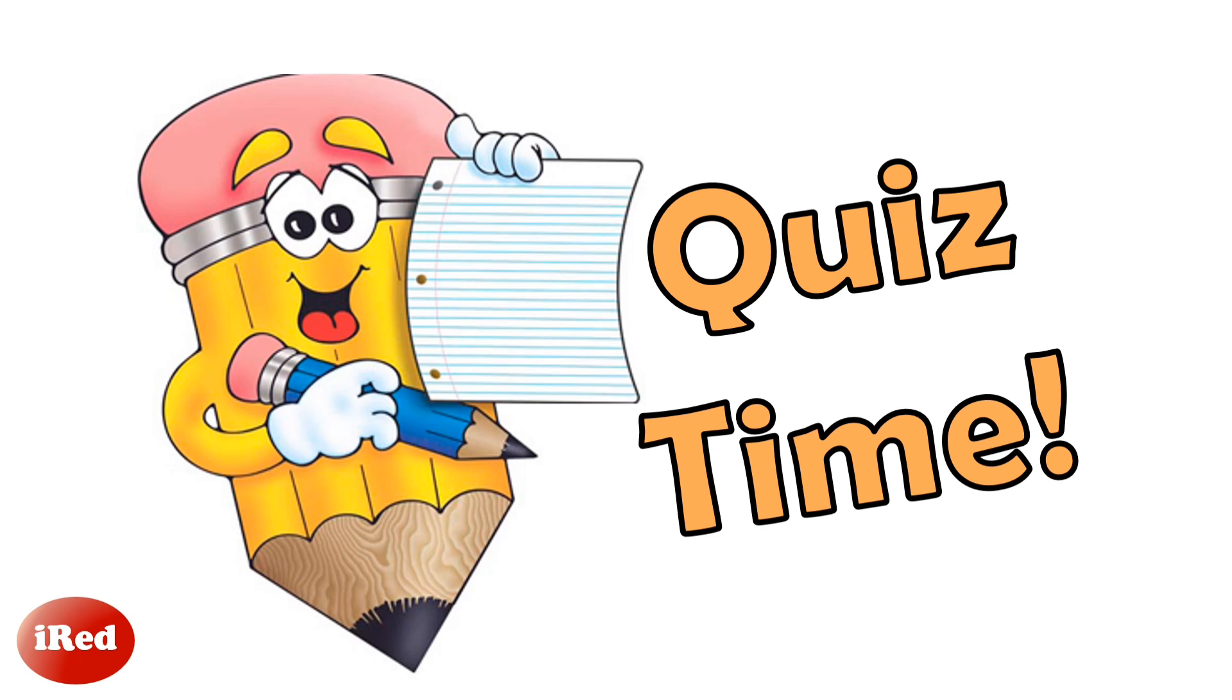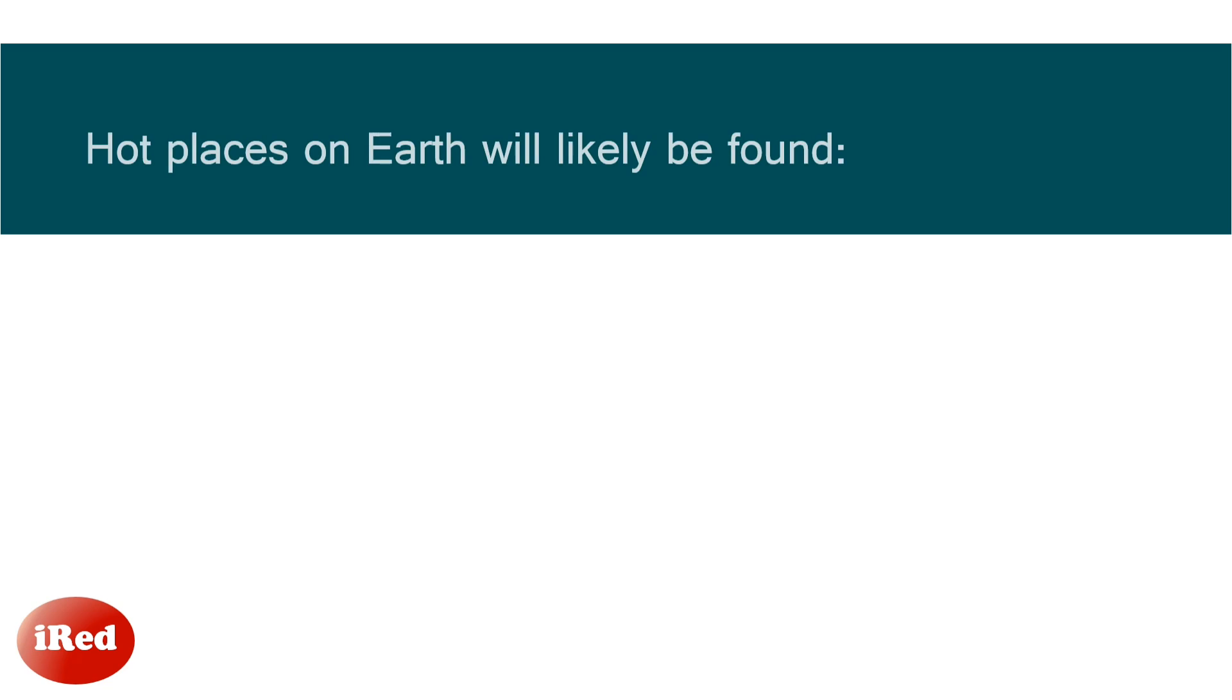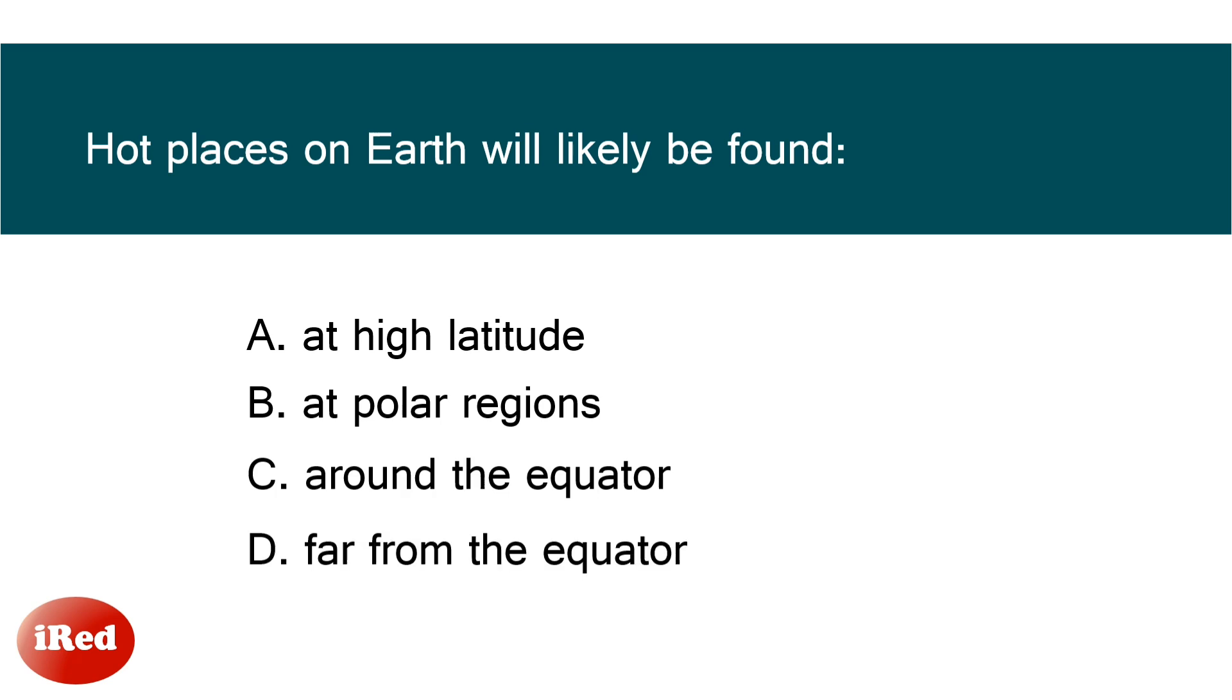Let's check what you have learned. Hot places on Earth will likely be found: Letter A at higher latitude, B at polar regions, Letter C around the equator, or Letter D far from the equator. The correct answer is Letter C around the equator.